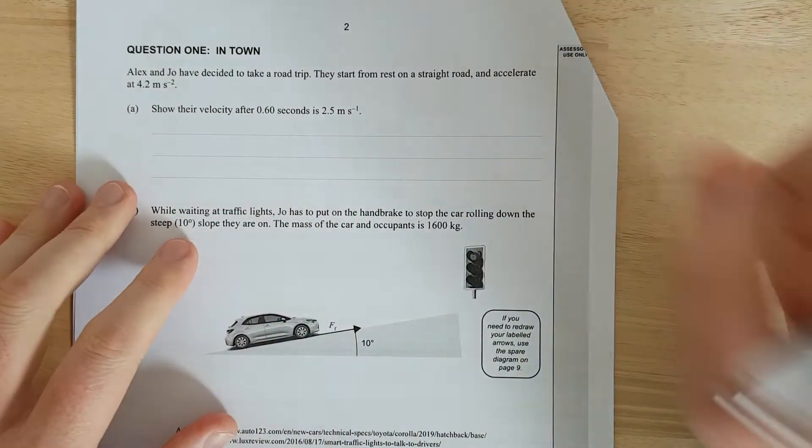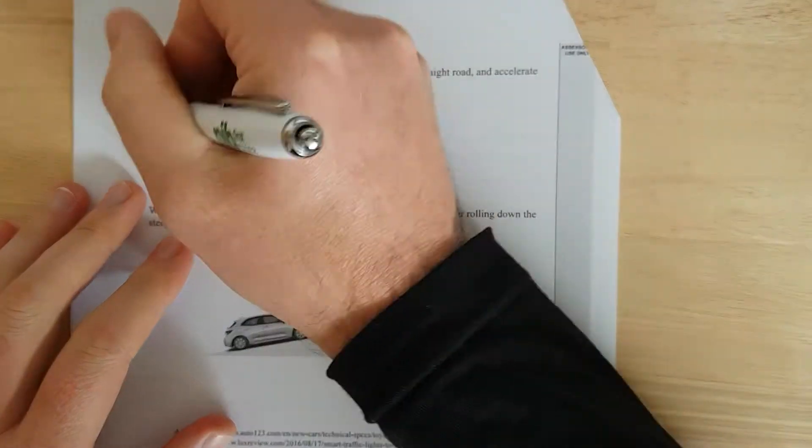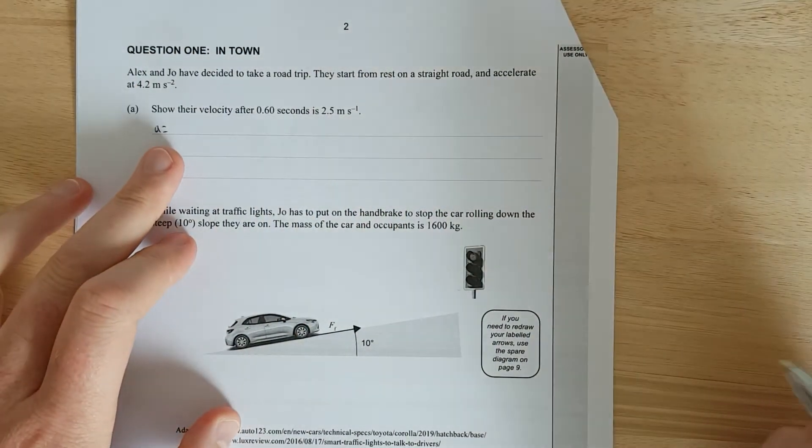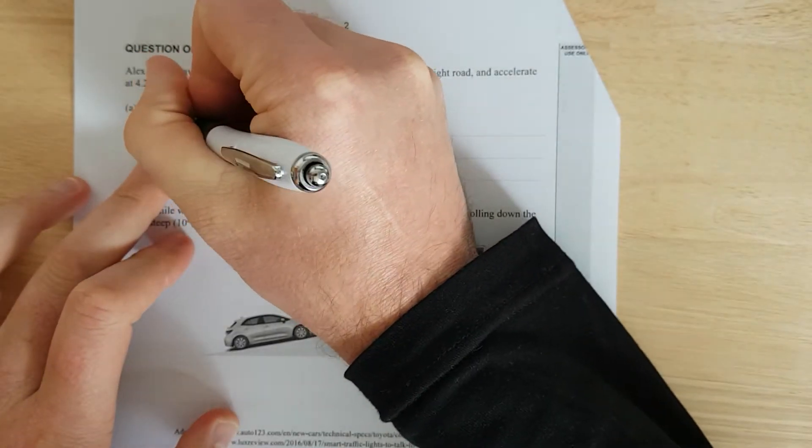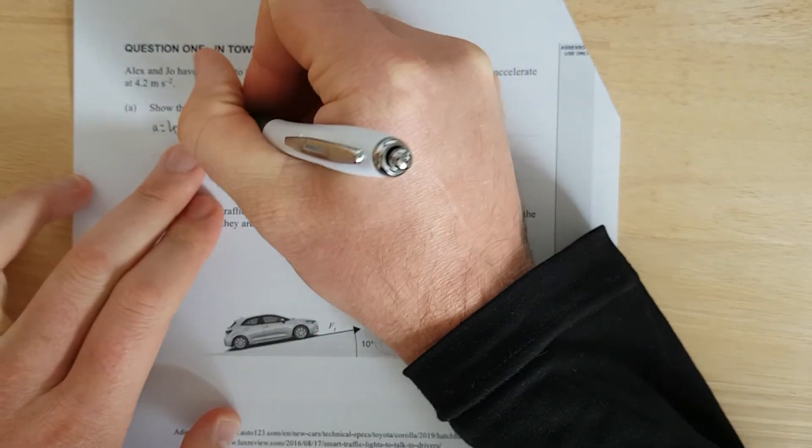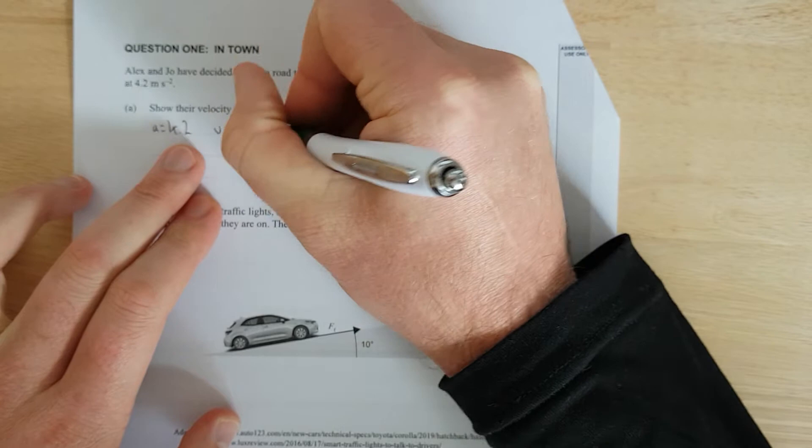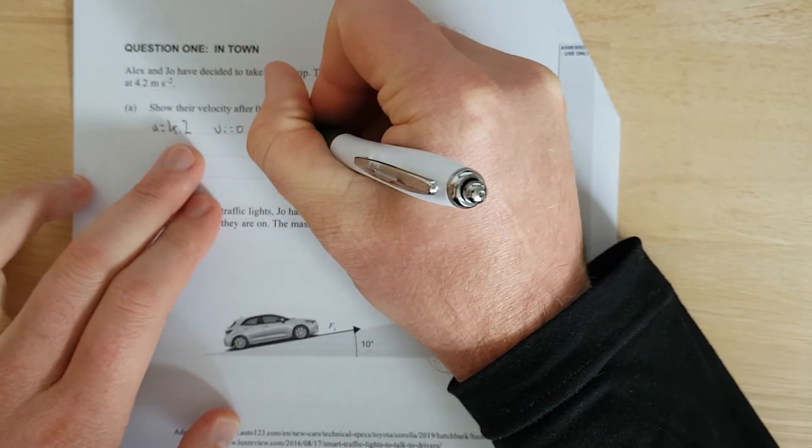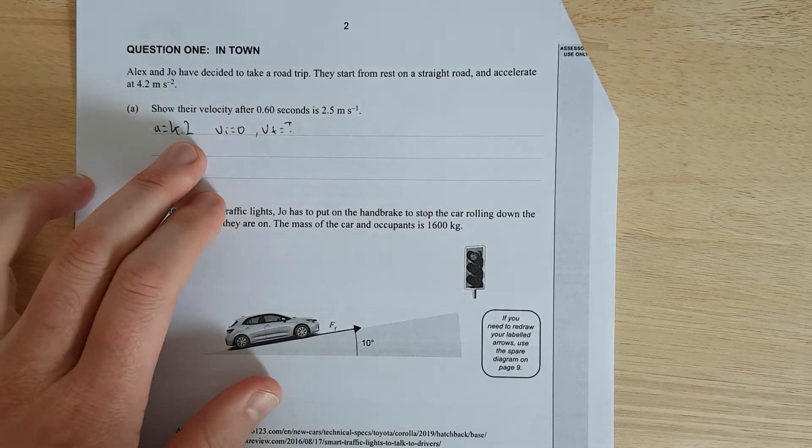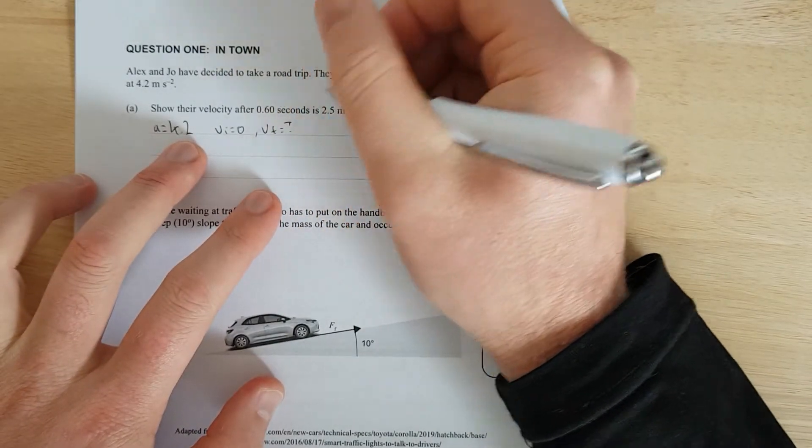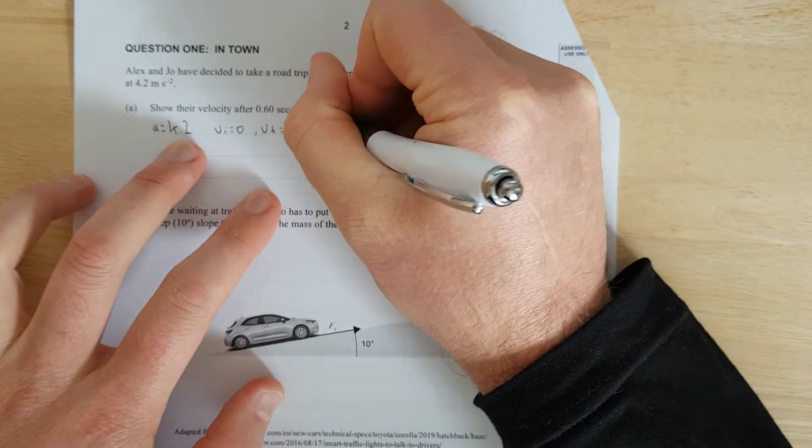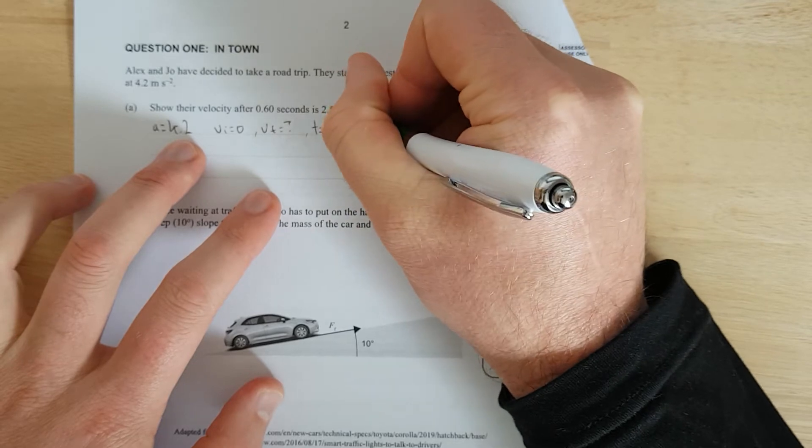Show that their velocity after 0.6 seconds is 2.5 meters per second. So first, what you should do is write down what you have. A equals 4.2, velocity initial equals 0. Velocity final, that's what we're trying to find. We'll just put a question mark even though they give it to us. We're just doing a proof question. And time is equal to 0.6 seconds.